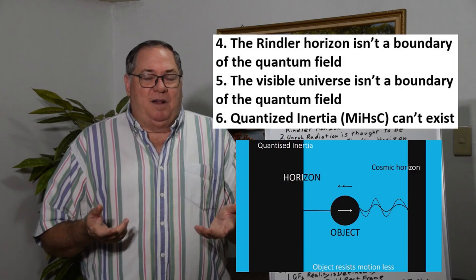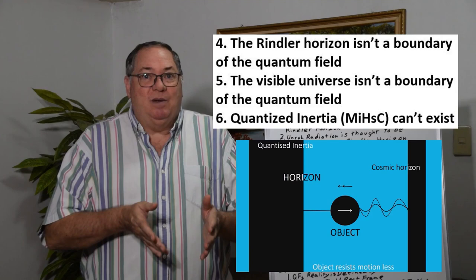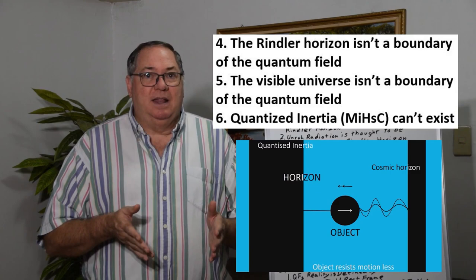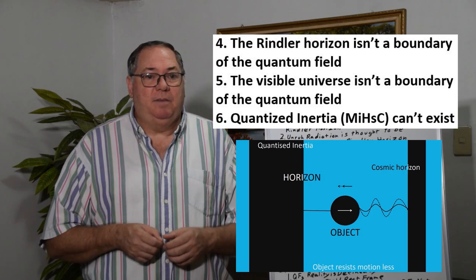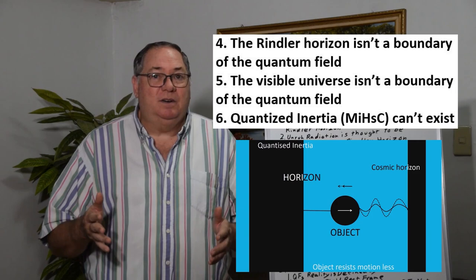Then we have the problem that the Rindler horizon does not exist in the quantum field because of this. It's not a boundary that the radiation, if there were radiation, would be oscillating against. It's not a solid boundary.